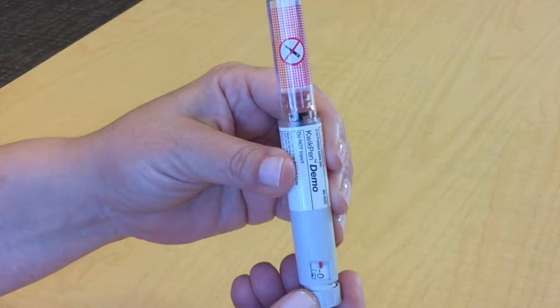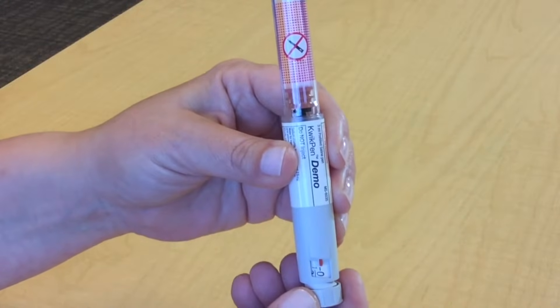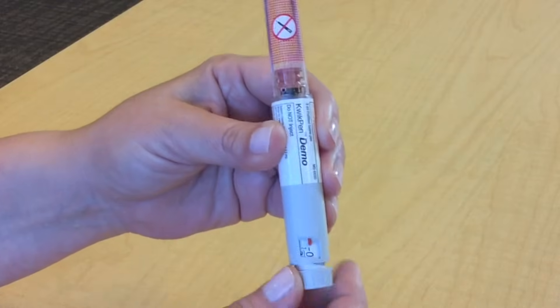Turn the dose knob until you see the correct number in the dosing window. It will be lined up with the dosing indicator, like this.